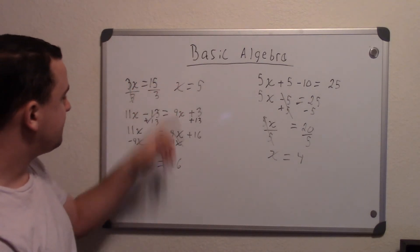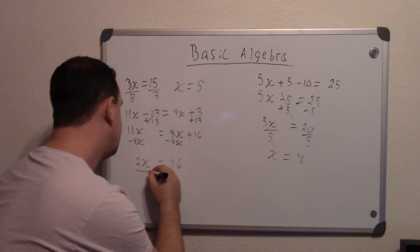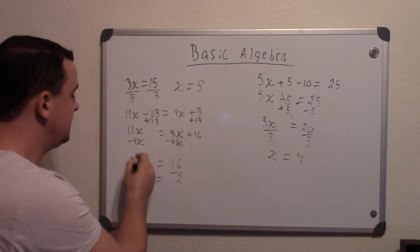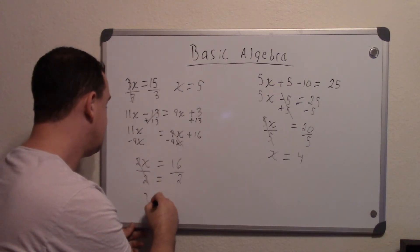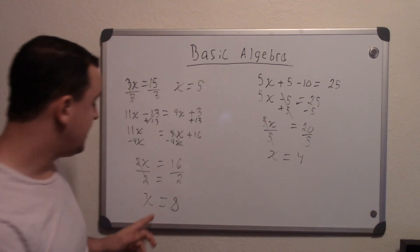And again, now we're back to that similar one. 2 is being multiplied by x. So now we divide by 2, both sides. Divide by 2. 2's cancel out, leaving you with x. And on that side, we now get 8. So now x equals 8.